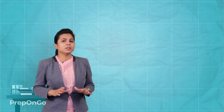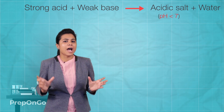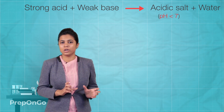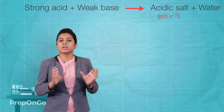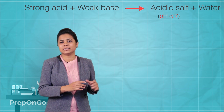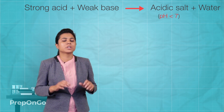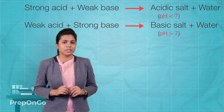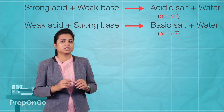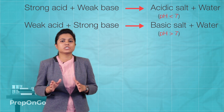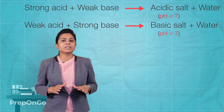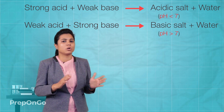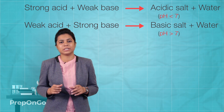When a strong acid and a weak base combine, they form an acidic salt which has a pH lower than 7. Similarly, when we take a strong base and a weak acid, it forms a basic salt with a pH more than 7. So a salt can be neutral only if both the acid and the base are strong.